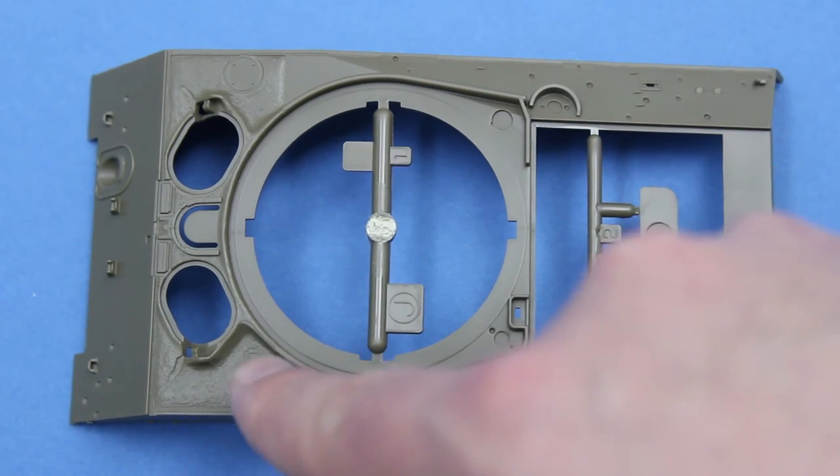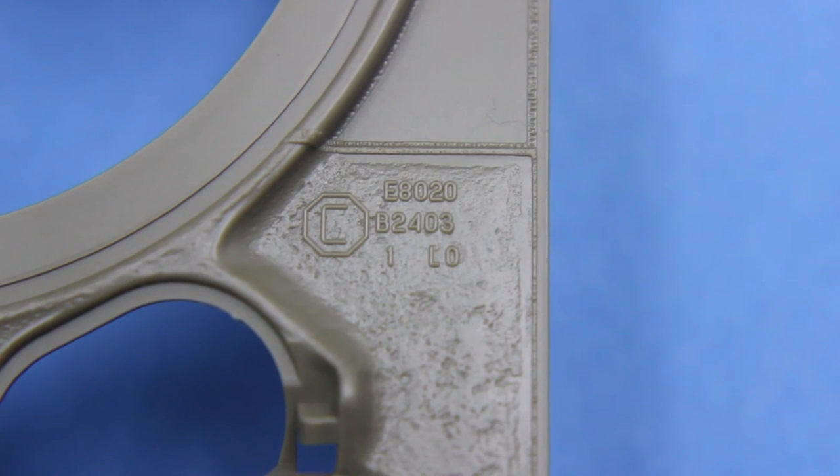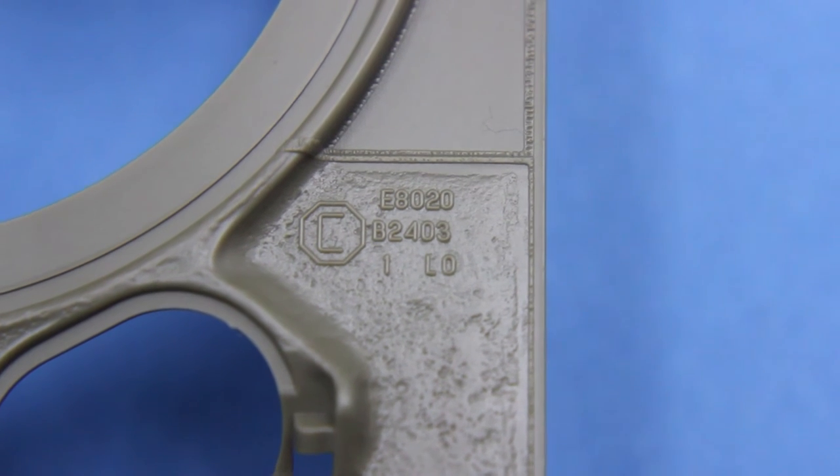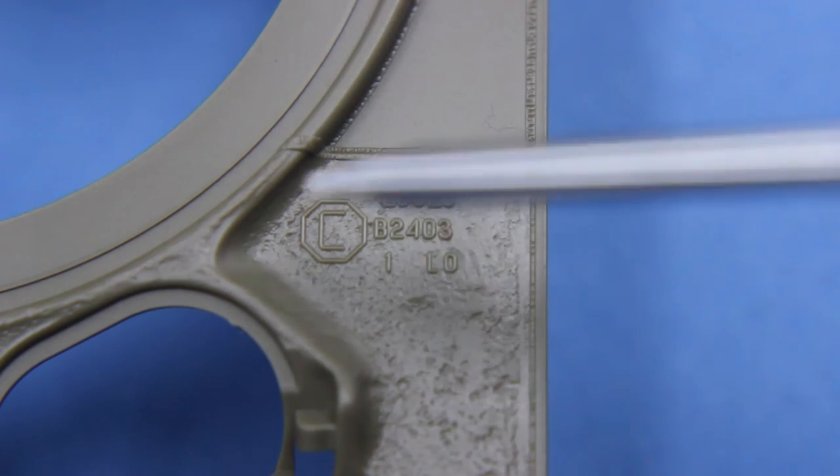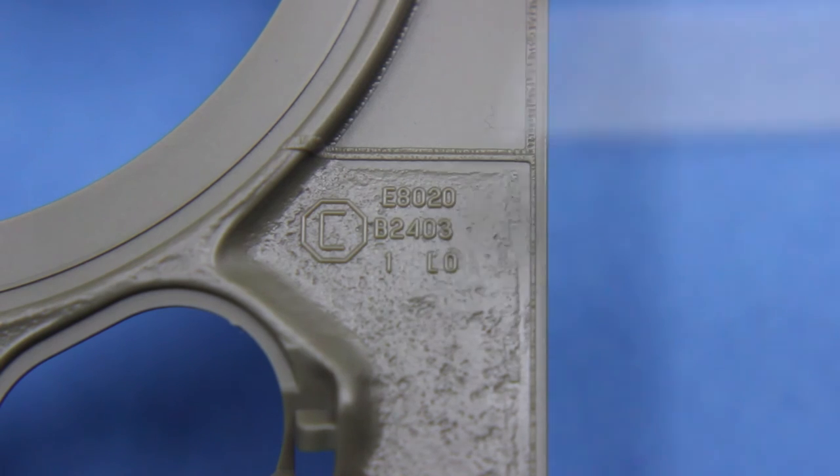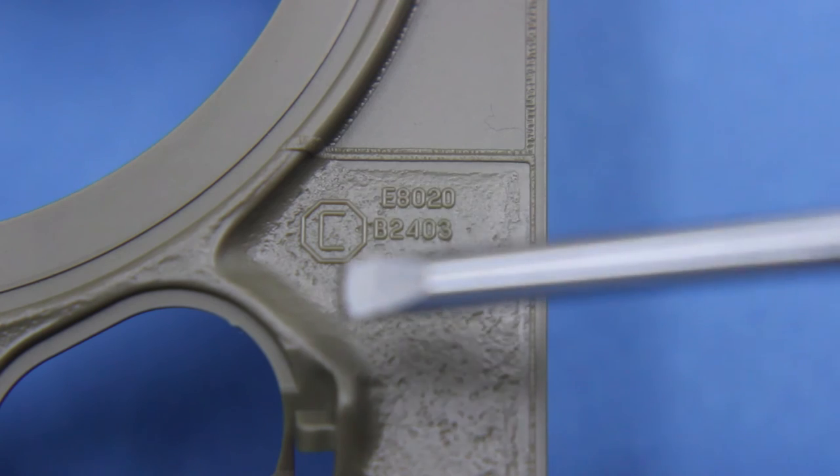Some nice casting texture as well. And you can see also here that we have the cast marks for American Steel Founders cast armour plant in East Chicago. This is this C logo. And the correct drawing number here for this cast part.